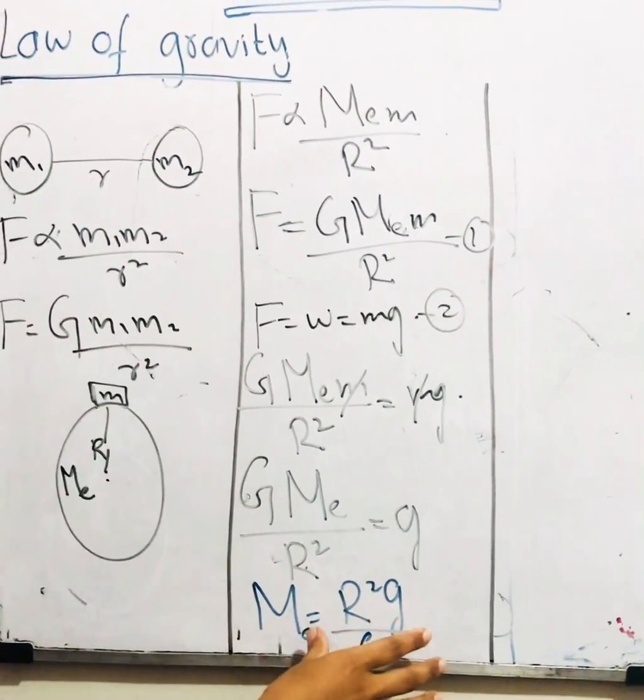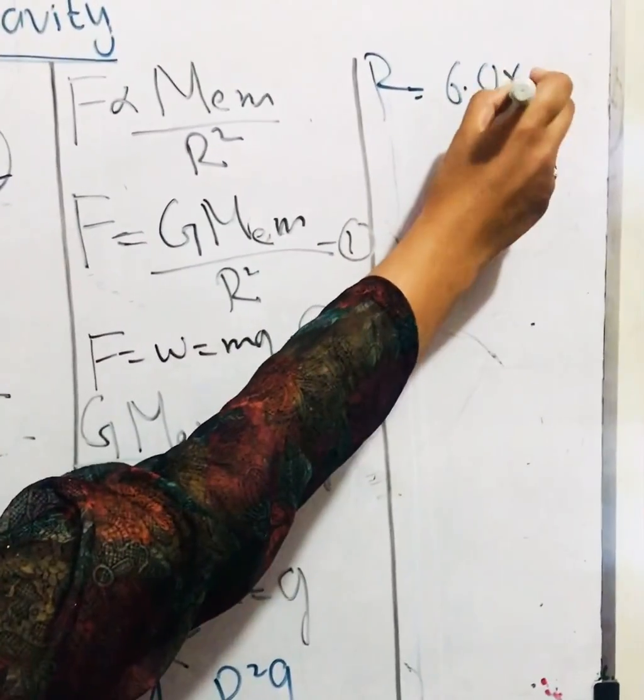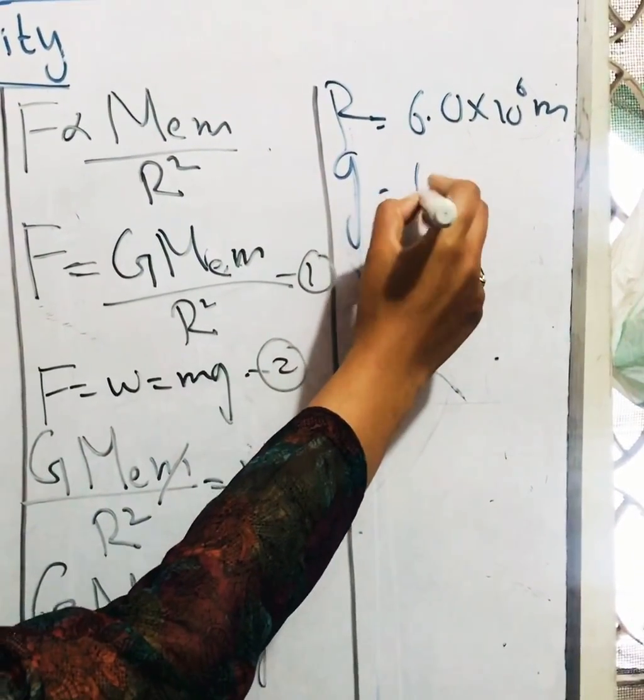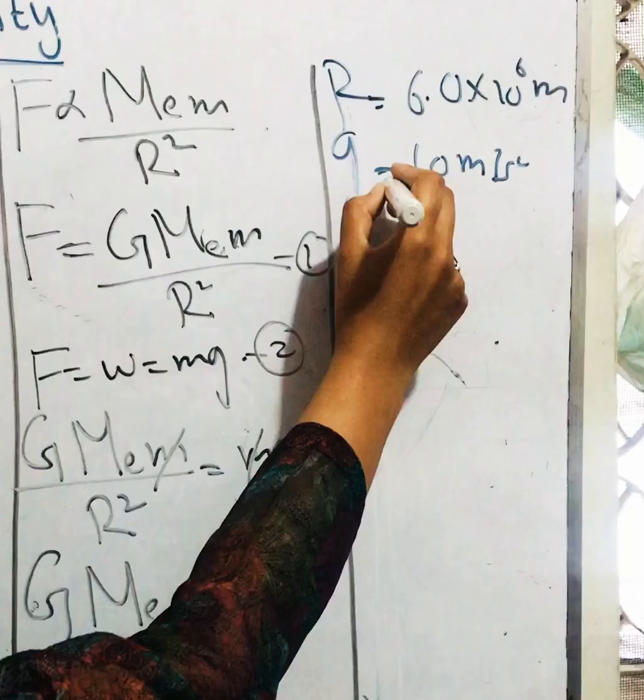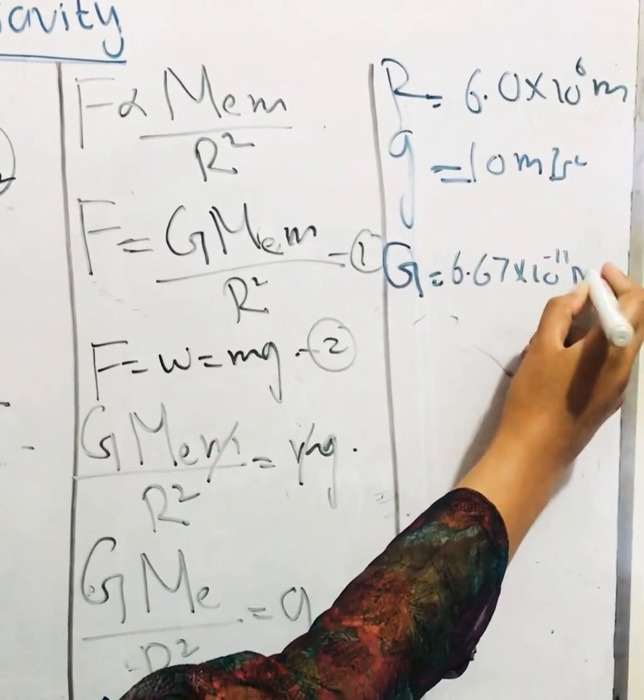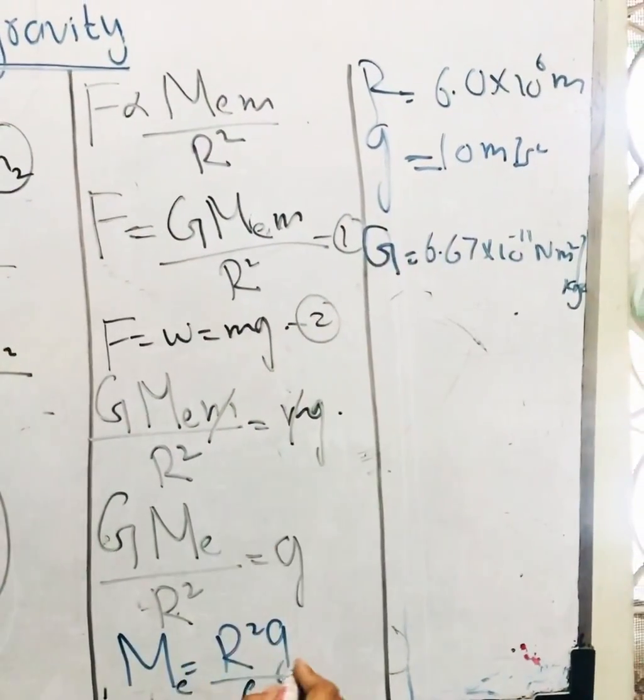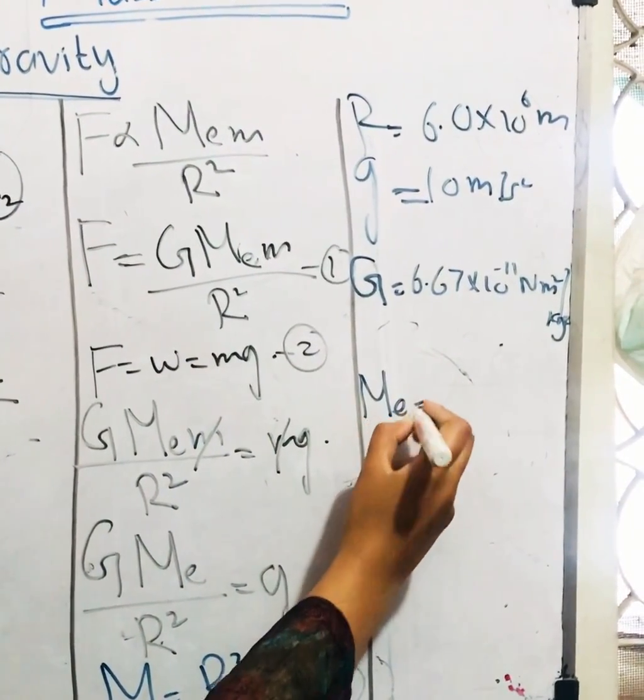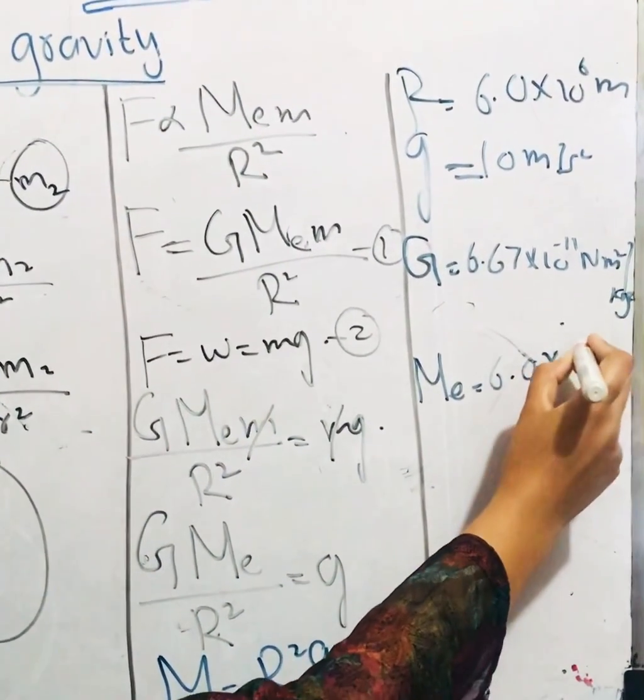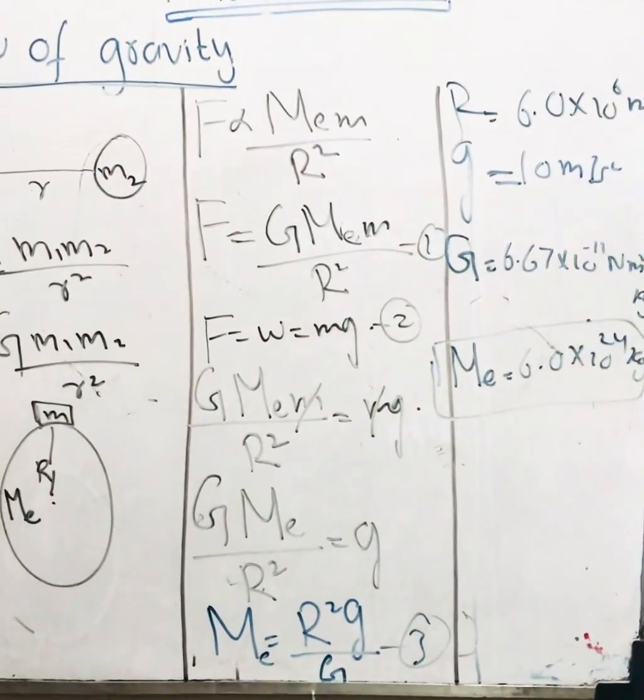All of these values are constant. I mean r is radius of Earth which is equal to 6.0 into 10 raised to power 6 meter. Small g is 10 meter per second square and capital G is 6.67 into 10 raised to power minus 11 newton meter square per kg square. So let's put all of these values in equation 3. M E when I put all of this value with the help of calculator, I got 6.0 into 10 raised to power 24 kg. This is mass of Earth.